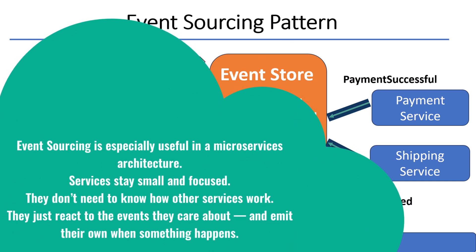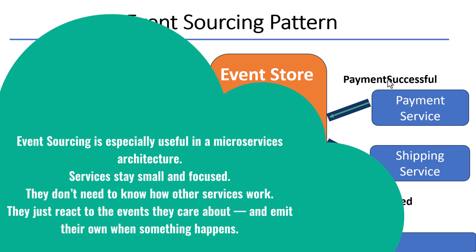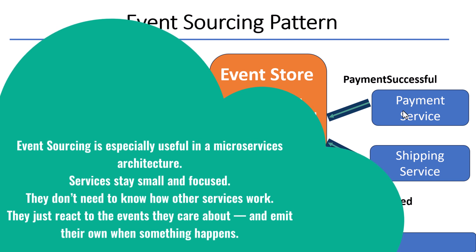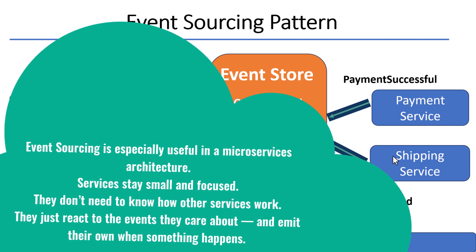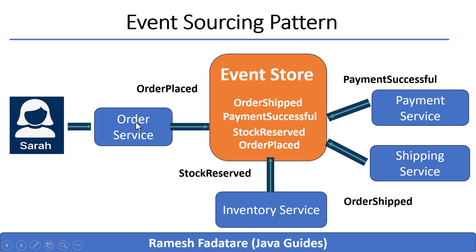Event sourcing is especially useful in a microservices architecture. Services stay small and focused — they don't need to know how other services work. They just react to the events they care about and emit their own when something happens. The order service doesn't call the inventory service; it just emits 'order placed' and moves on. The inventory service listens and reacts — same for payment and shipping. This keeps the system loose and flexible, and makes it easy to add new services without changing old ones. You can even add a notification service that listens for 'order shipped' and sends a confirmation email — no changes needed to the shipping service, just plug in and go.